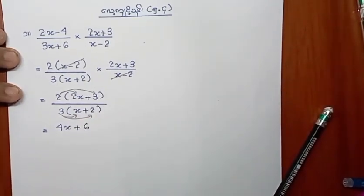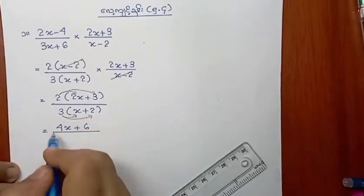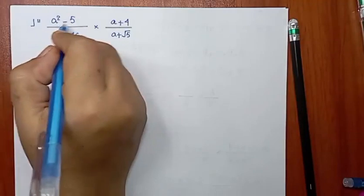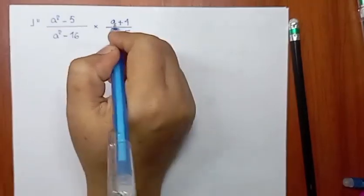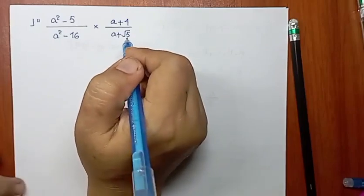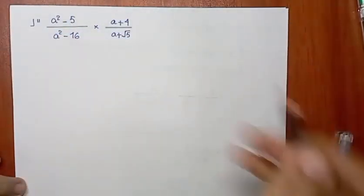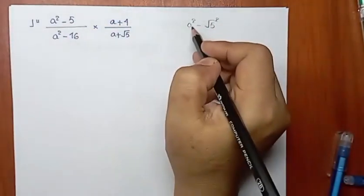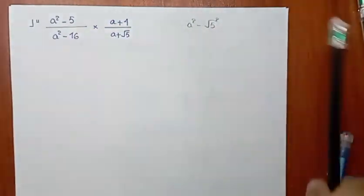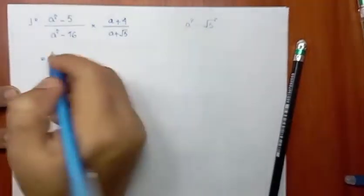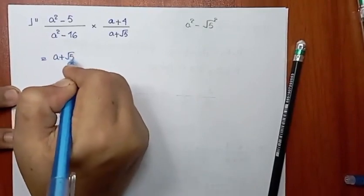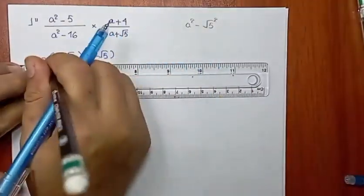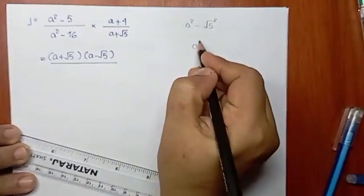4a plus 6, 3a plus 6. 1 squared minus 5, 1 squared minus 6, multiply 1 squared minus 5. 1 squared minus 5, 1 squared minus 6, e squared minus 16.